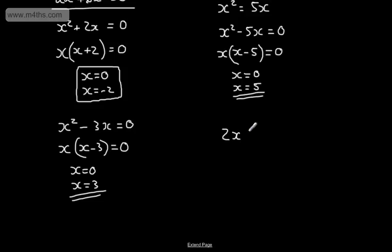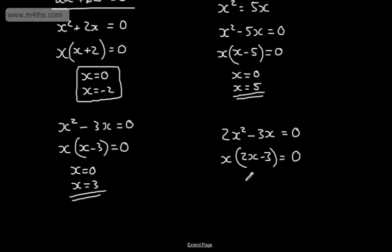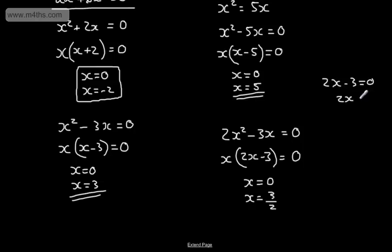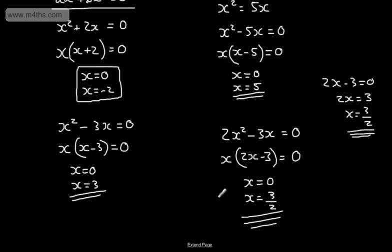Let's do another one: 2x squared minus 3x is equal to zero. The common factor again is x, leaving 2x minus 3. So x multiplied by 2x minus 3 is equal to zero. That means either x is equal to zero, or 2x minus 3 is equal to zero. Setting 2x minus 3 equal to zero, we add 3 to both sides to get 2x equals 3, then divide by 2, giving x equals 3 over 2. So the two solutions are x equals zero or x equals 3 over 2.